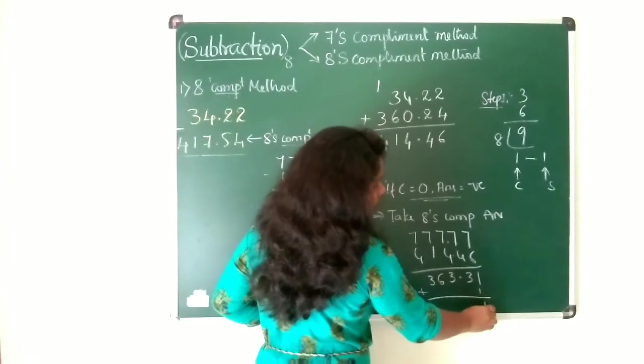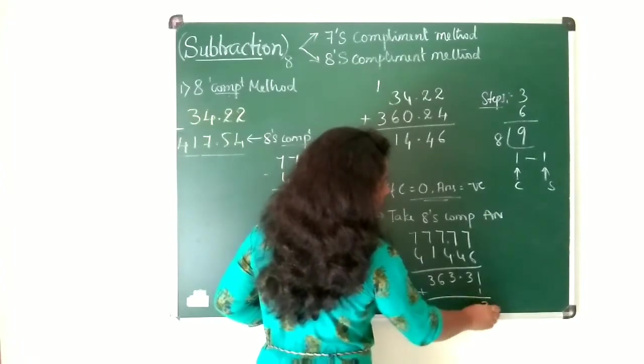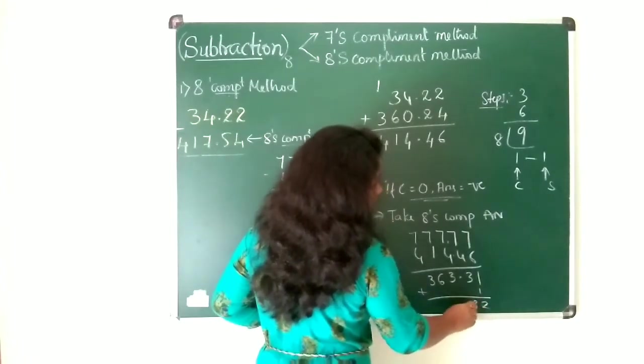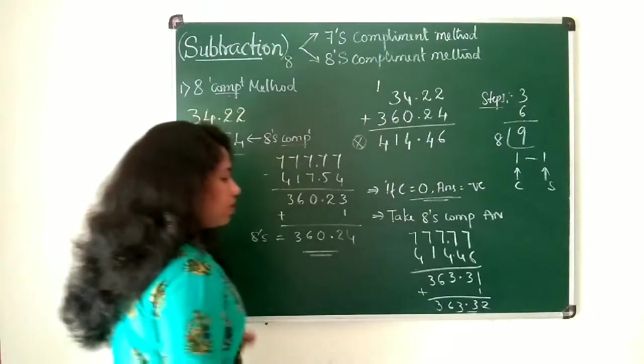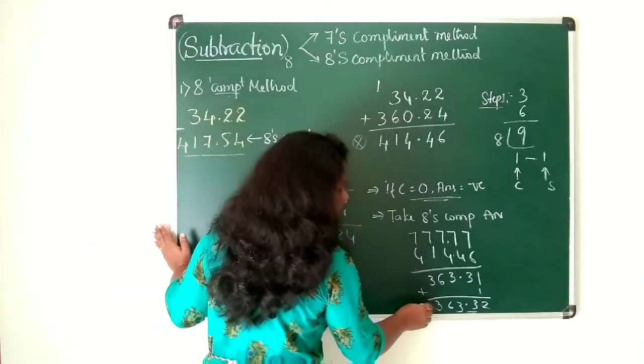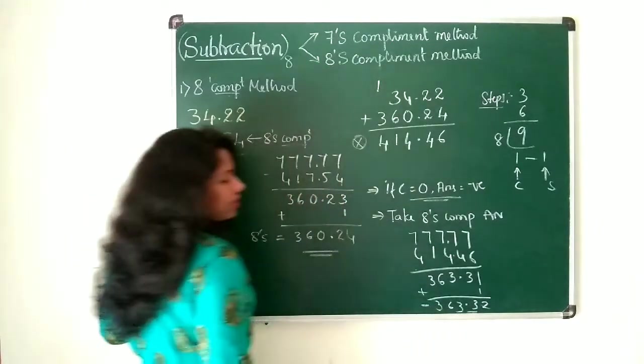So that is 1. 1 plus 1 is 2. And this is 363.32. So your answer is 363.32 with negative sign.